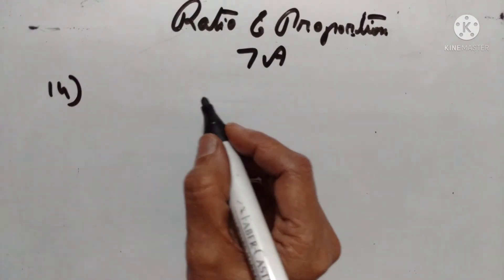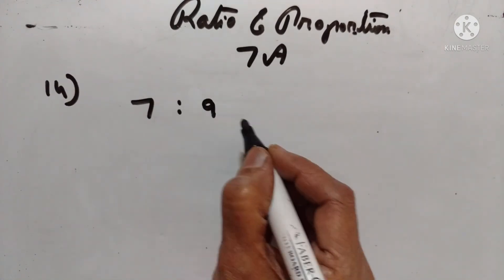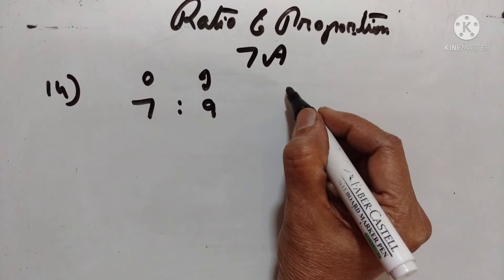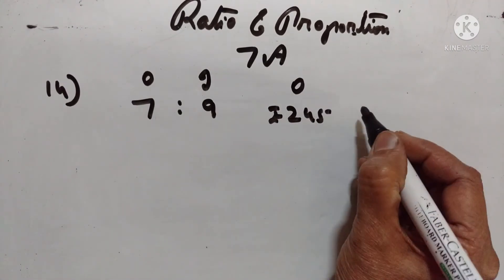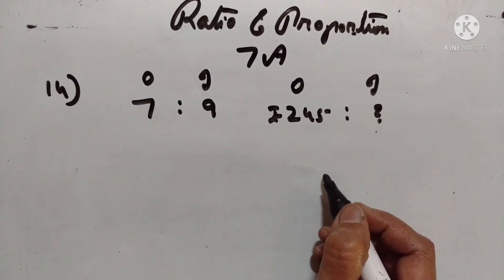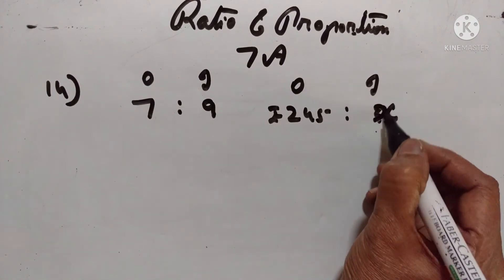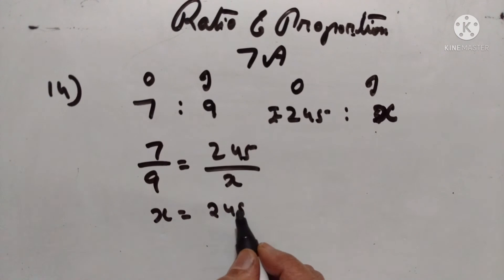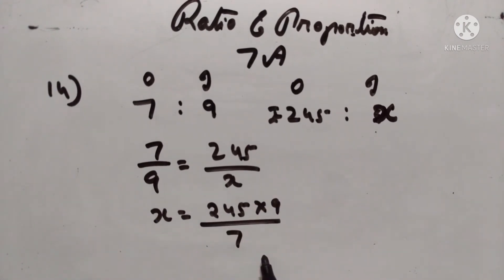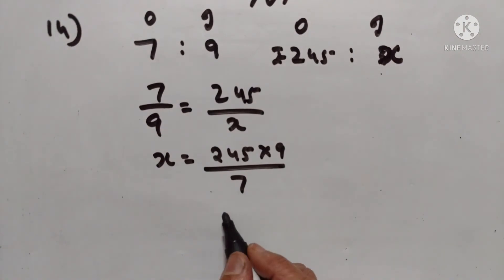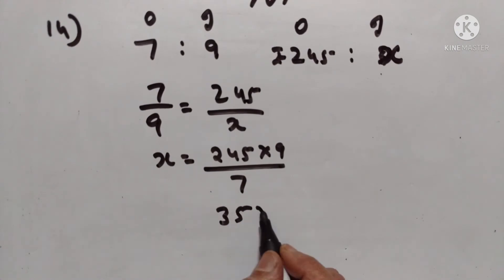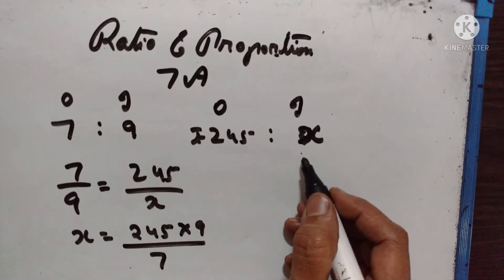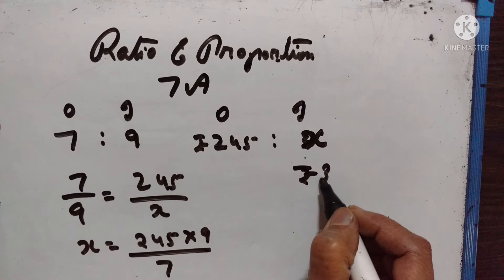Fourteenth problem. The bus fare between 2 cities is increased in the ratio 7 to 9. Find the increase in the fare if the original fare is rupees 245. This is the original fare and this is the increased fare. Let the increased fare be x. So 7 upon 9 is equal to 245 upon x. x is equal to 245 into 9 upon 7, which equals Rs. 315. So Rs. 315 is the increased fare.